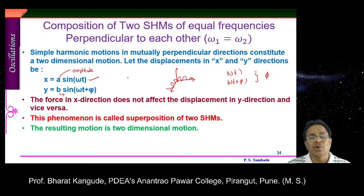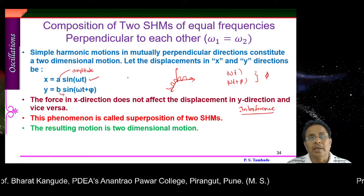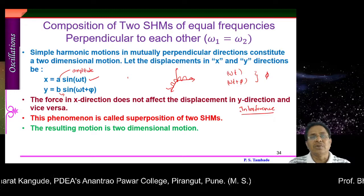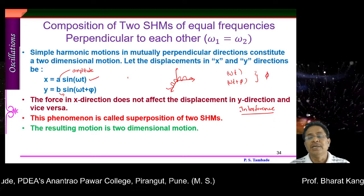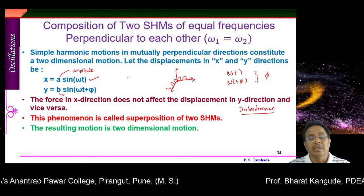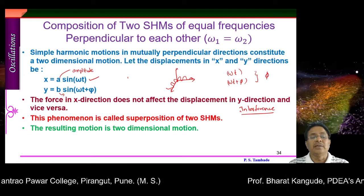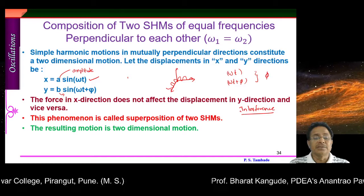Interference is a phenomenon where an object is illuminated by two light radiations with a certain small phase difference between them, giving rise to constructive and destructive interference. This phenomenon of interference is also a phenomenon of superposition of two light waves, where light waves work as two SHMs. Mechanically, whenever two SHMs act on a particle giving rise to a new pattern or new type of motion, it is called superposition of two SHMs, resulting in two-dimensional motion.